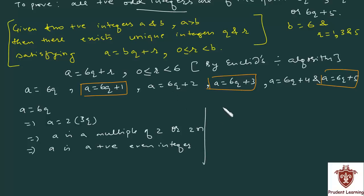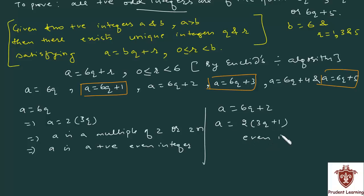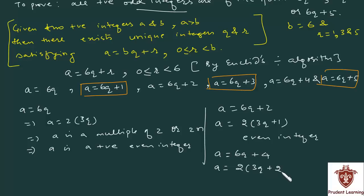Similarly, a is equal to 6q plus 2 can be written as 2 times (3q plus 1). Again, a is a multiple of 2 and can be written in the form 2n, so a is a positive even integer. This contradicts the given condition that a is a positive odd integer.